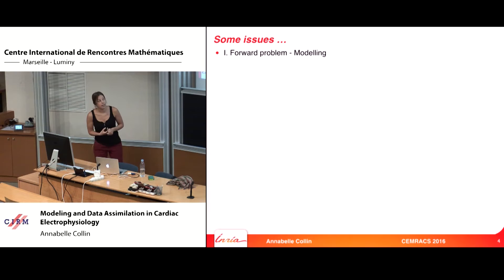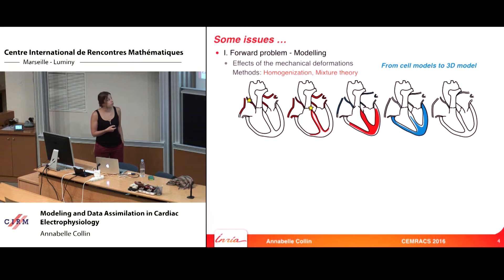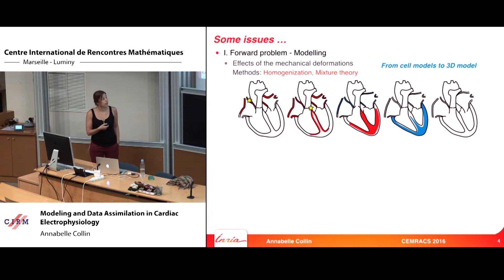There are many issues in cardiac electrophysiology. Concerning modeling, we can look at the effect of mechanical deformation on electrical activity. The bidomain model comes from a microscopic bidomain model, and to obtain a 3D model you need a homogenization process. If you want to integrate a new effect and improve your model, you need to restart the entire process with homogenization or mixture theory.